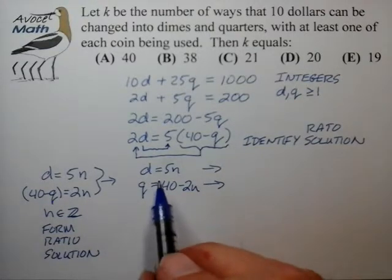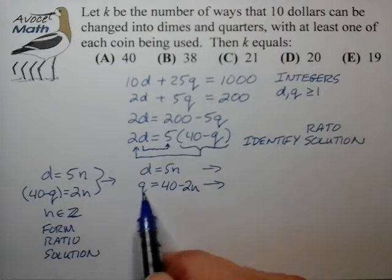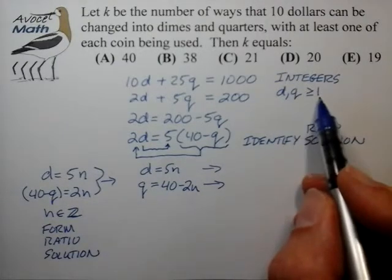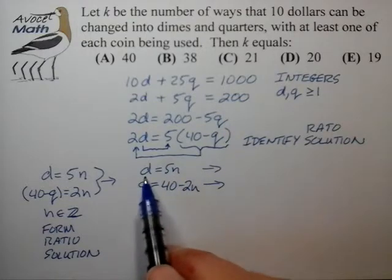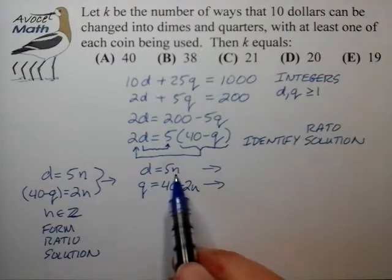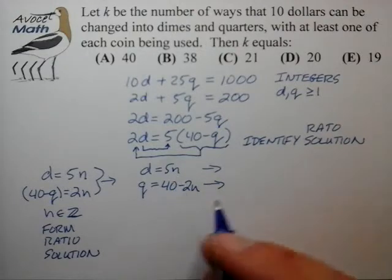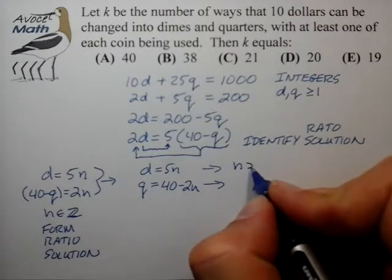Now looking at this we can realize that if we want to solve for d and q that are both greater than or equal to 1, that puts some constraints on the value of n. In the case of d we find that n can't be 0, it can't be anything negative. We find that n has to be 1 or larger. So let's write that condition down.